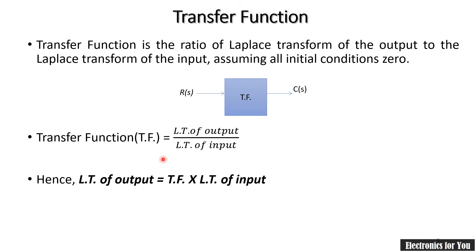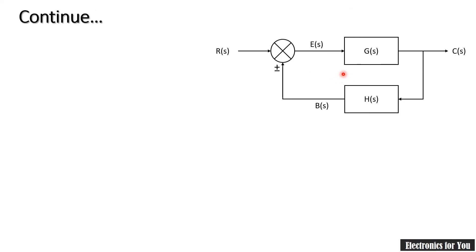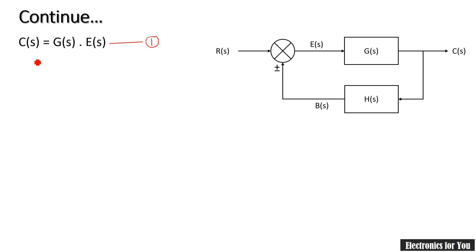We will use the same formula for our derivation. Here we want to calculate C(S) upon R(S), that is the transfer function. We will first calculate C(S). C(S) is the output generated by the G(S) block, therefore as per our formula, C(S) equals G(S) multiplied by its input E(S). So C(S) = G(S) · E(S). Let this be equation number 1.